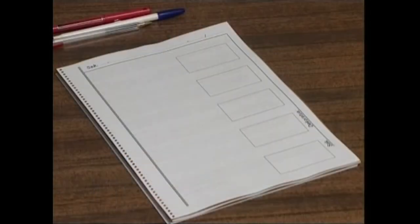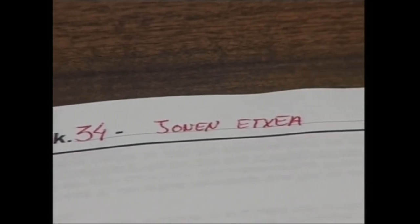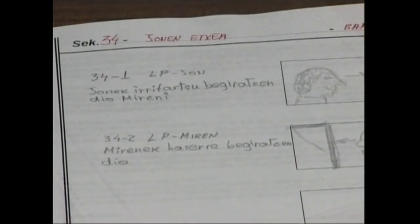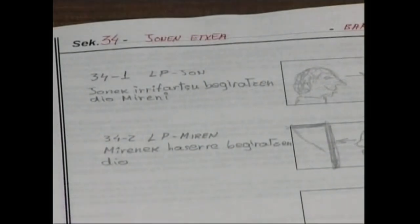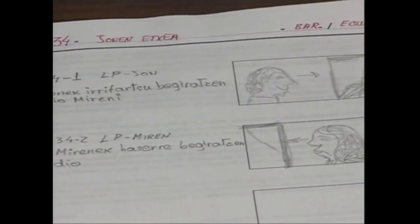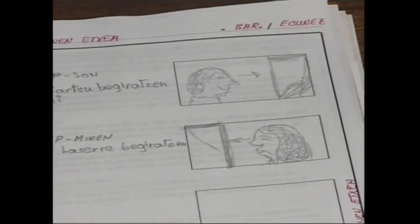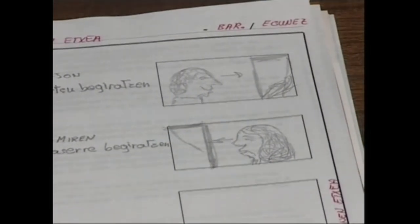Estoriboard deitzen dena, eskena bat osatzen duten plano guztien marrazki multsoa da. Beste modu batera esanda, grabatu nahi dugun historiaren komikia. Irudietan duzuen txantiloia oso erraza da. Bertan, sekuentziaren edo eskenaren zenbakia, dekoratua eta kanpoaldean ala barrualdean eta egunez ala gauez grabatuko dugun zehaztuko dugu. Alboetako koadrotxoetan, grabatuko ditugun planoak marraztuko ditugu, eta euren eskuinean, sekuentziaren edo eskenaren zenbakia eta planoarena jarriko ditugu. Jarraian, plano motaren adierazgarria eta aktoreen elkarrizketa eta ekintzak idatziz zehaztuko ditugu. Begiraden norabideak, aktorea irteten den ala sartzen den kuadroa, makilaia berezia eta horrelako oarrek ere grabazioa erraztu egingo digute.